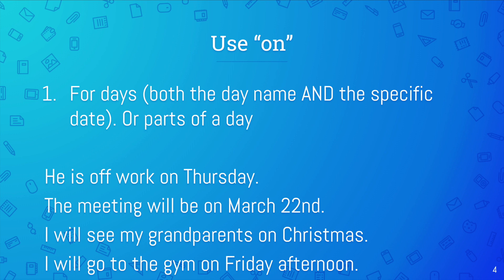You want to use 'on' for days. This can be either the name of a day like Friday, Saturday, Thursday, or a specific date like August 9th or July 12th. You can also use 'on' for parts of a day. He is off work on Thursday. The meeting will be on March 22nd. I will see my grandparents on Christmas — Christmas is the specific name of a day, so that is okay. I will go to the gym on Friday afternoon.